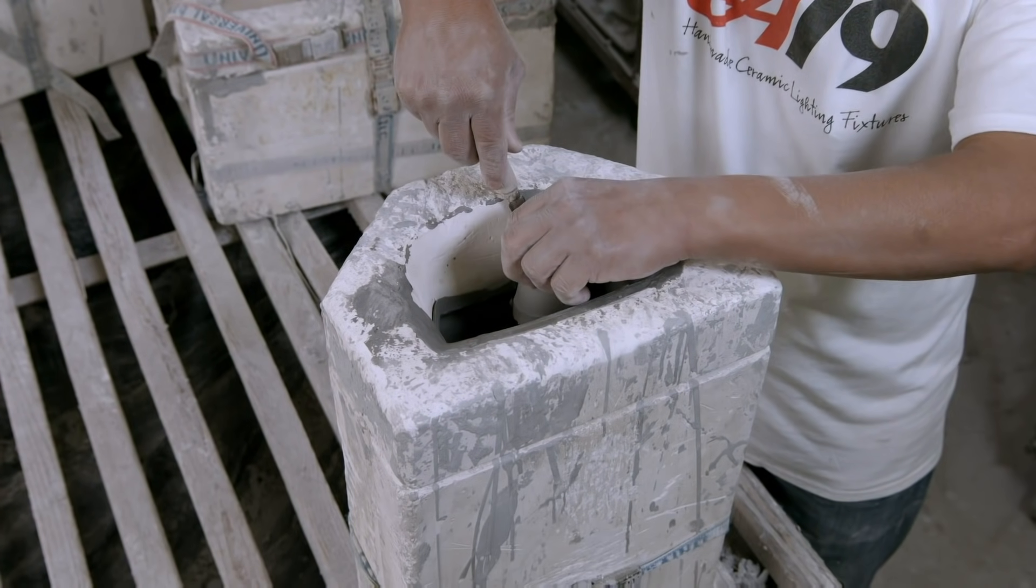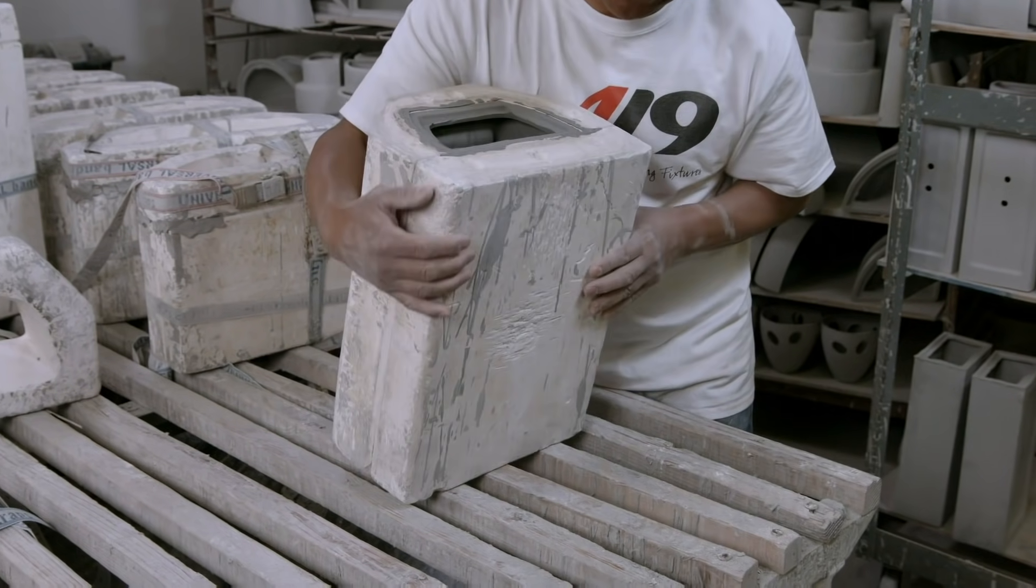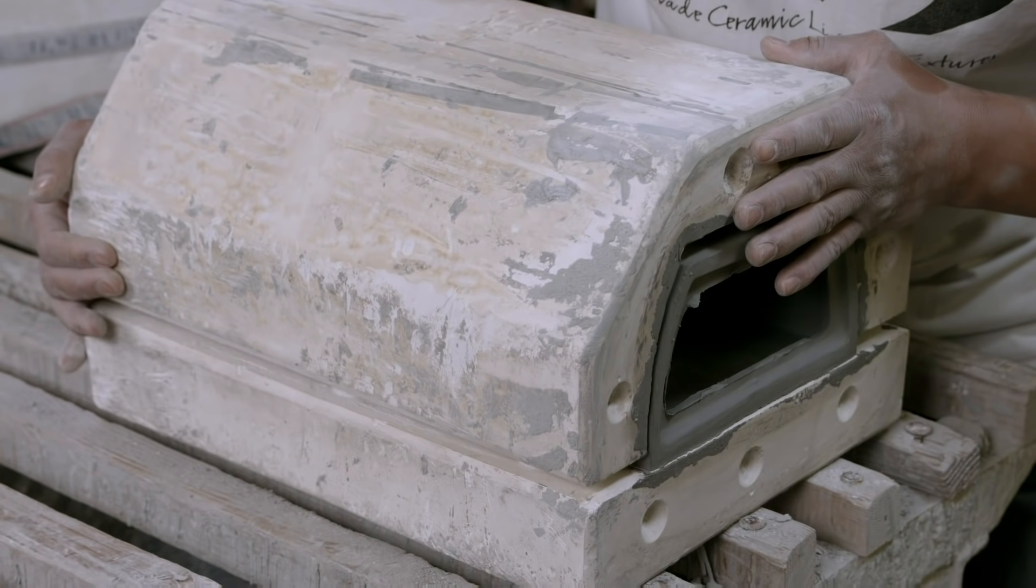Once it's a putty-like consistency, the excess at the top is removed. The mold is set on its side and opened to reveal the newly formed sconce casing. It's then left to cure overnight.